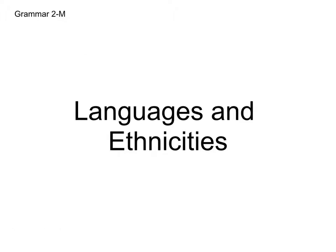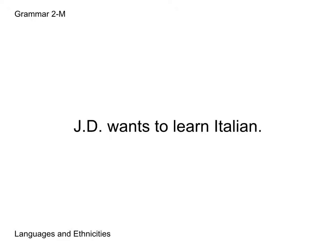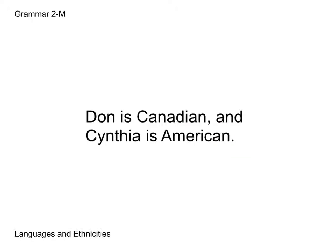Now we're going to move on to languages and ethnicities. Here we have the sentence "JD wants to learn Italian." Notice that for the language Italian, you capitalize that first letter — any language in a sentence must be capitalized. In the sentence "Don is Canadian and Cynthia is American," we have two ethnicities, Canadian and American, and we capitalize both. Every ethnicity will be capitalized. There is a reference page at the end of the book listing which words are languages and which are ethnicities.